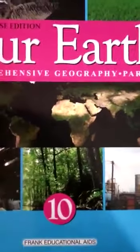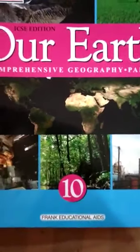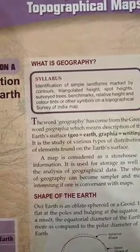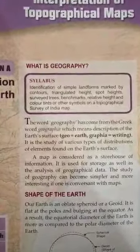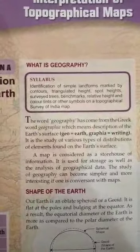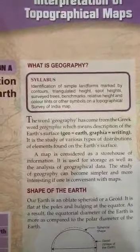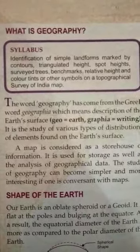Let's start Geography for Class 10. The first chapter we are going to start is Interpretation of Topographical Maps. Children have already read a lot about maps and different types of maps in previous classes, so let's look at what new things we are going to learn in this chapter.